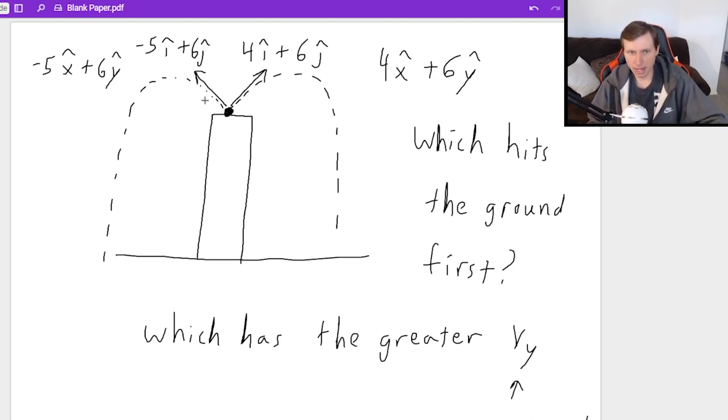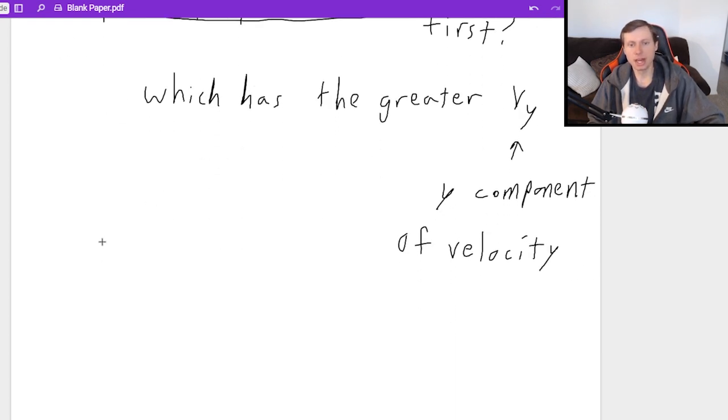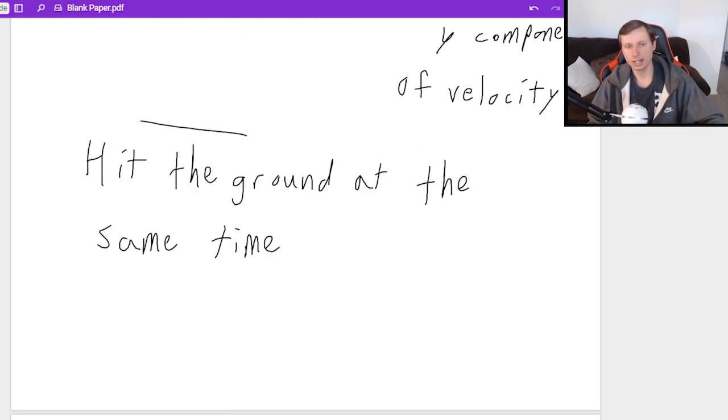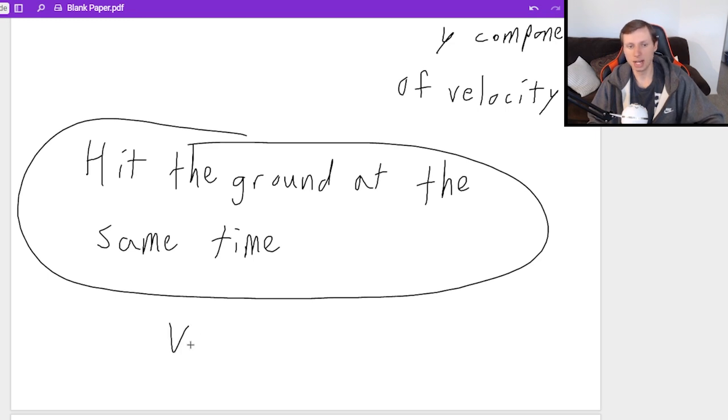So all we need to do is compare these two objects in terms of their y components. So since they have the same y components, they're both 6j hat or 6y hat for both, they will hit the ground at the same time. And that's it. That's our answer. Hit the ground at the same time. And again, the reason why is because their y component of velocities are equal to each other.